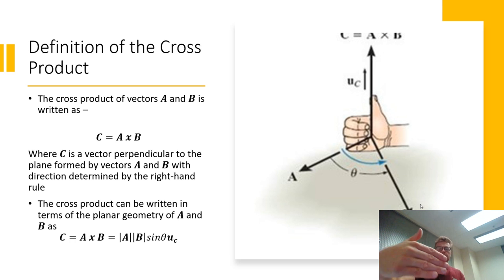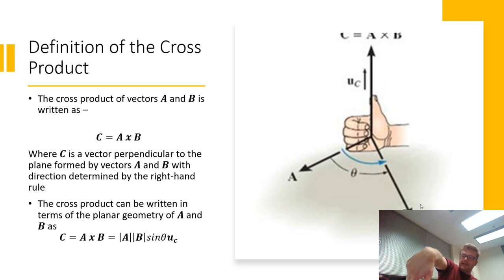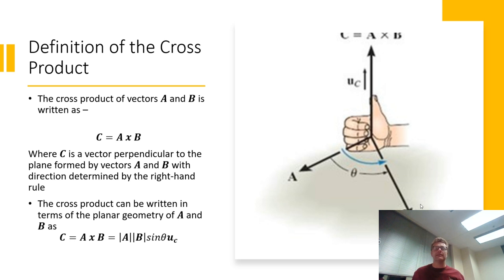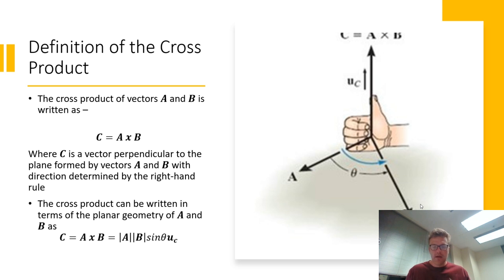So in that case the cross product is in the direction shown. However, if you're computing B cross A, you put the base of your right hand along B and cross into A, and your thumb will be pointing down. The right-hand rule really allows you to determine whether that perpendicular vector comes out of the plane or goes into the plane.